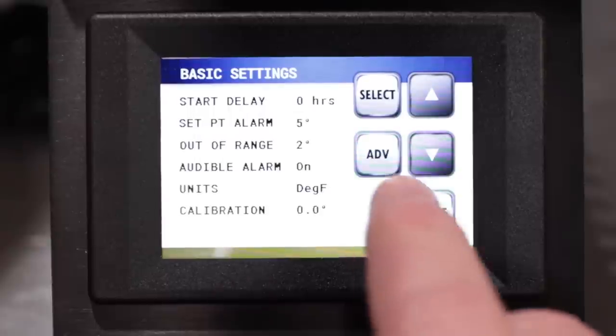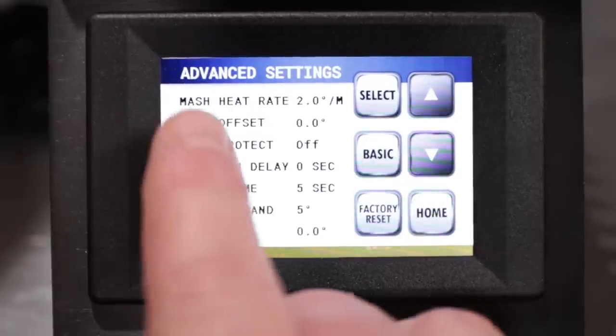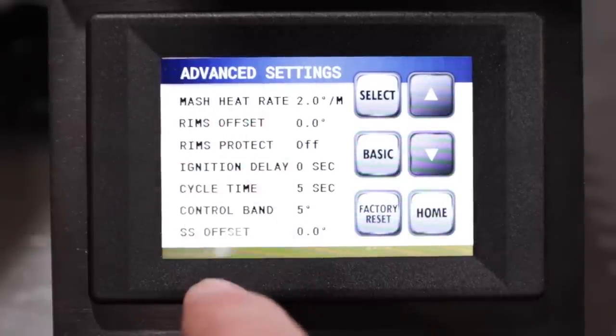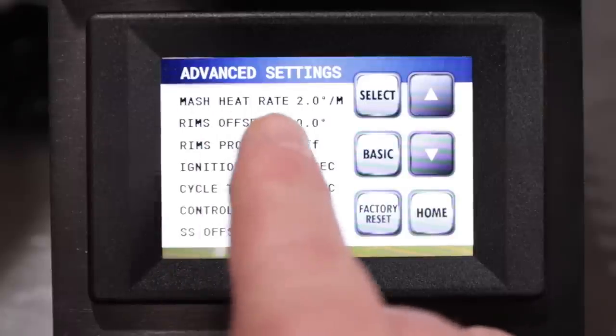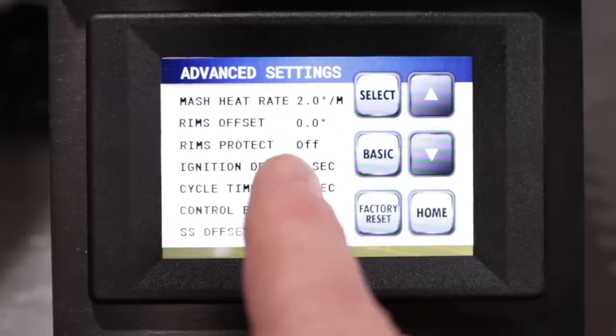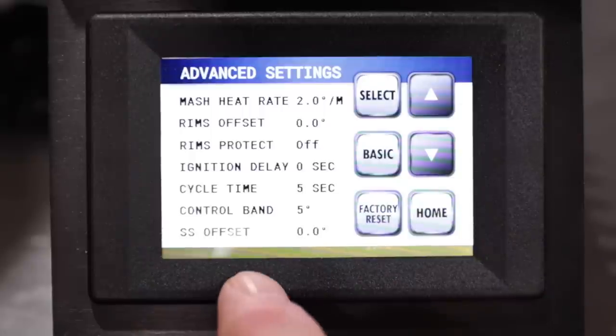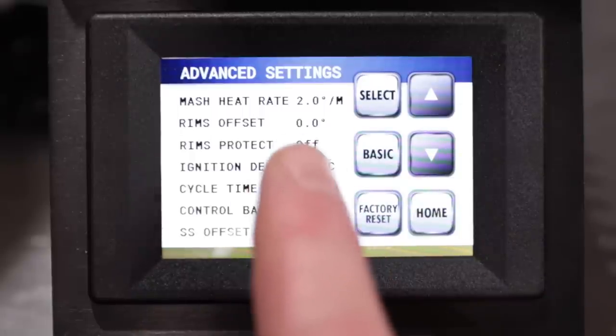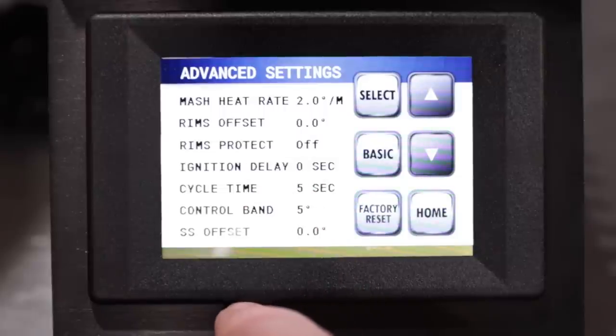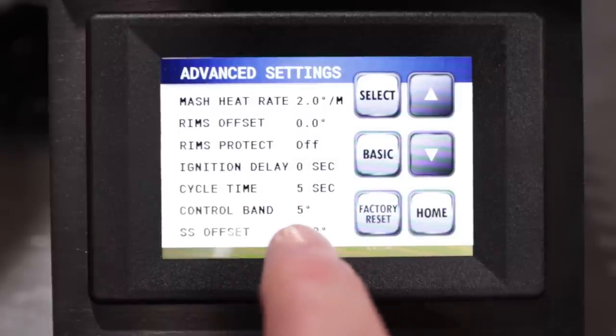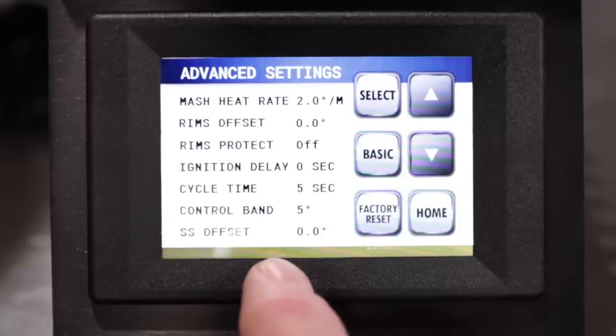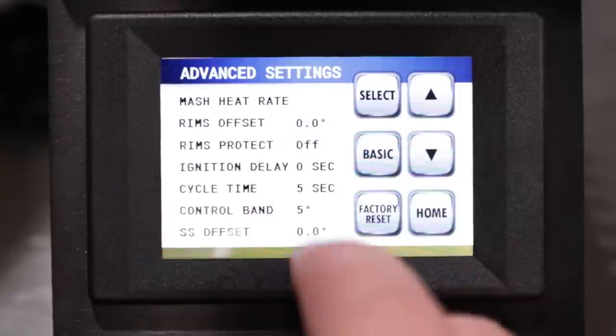Alright, going back into the menu, we'll go into the advanced menu and that menu is, this is where we get into some more advanced features. Now the mash heat rate, the way that the system works, if you do a step mash or you want to raise your mash temperature in between different steps, the system doesn't actually wait until you get to the mash temperature in order to start the timer.